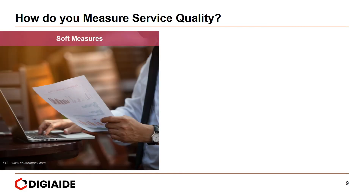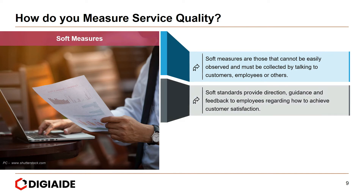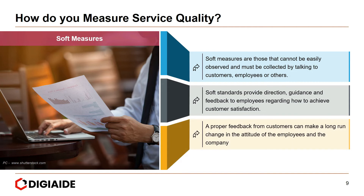Moving on to soft measures: soft measures are those that cannot be easily observed and must be collected by talking to customers, employees or others. Soft standards provide direction, guidance and feedback to employees regarding how to achieve customer satisfaction. Proper feedback from customers can make a long-run change in the attitude of employees and the company.